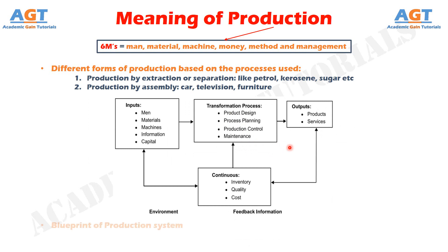Blueprint of Production System: An enterprise in the beginning needs to define its production system, which is considered as the framework within which all production-related activities and operations take place. Manufacturing process is the transformation process through which inputs are converted into outputs. An appropriate designing of a production system ensures the coordination of various production activities and operations. There is no single pattern of production system which is universally applicable in all kinds of enterprises; this varies from one enterprise to another depending upon many parameters.